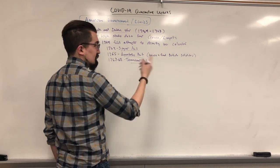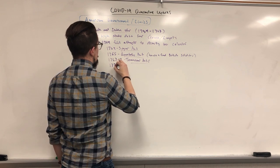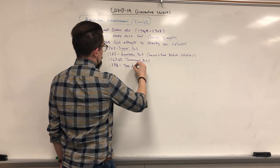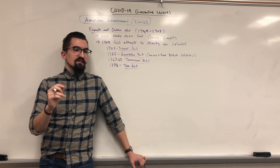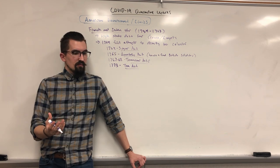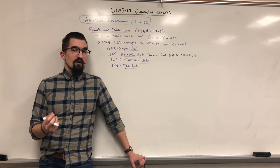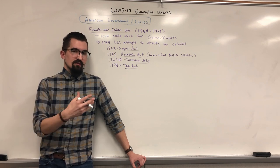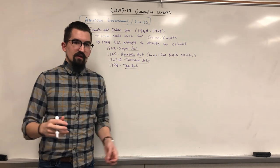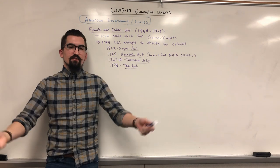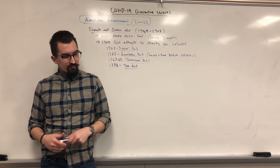In 1773, they passed the Tea Act, making it so colonists could only buy tea from the British East India Company, a struggling state-chartered company. Even though British tea was cheaper than Dutch smuggled tea, the colonists refused to buy it because doing so would condone taxation without representation. This led to the Boston Tea Party, where they threw British tea into Boston Harbor.